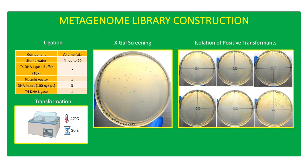One Shot Top 10 competent cells were used for transformation. Sterile lysogeny broth was used to grow cells. Transformation tubes were manually shaken intermittently every 10 minutes for 1 hour during incubation at 37 degrees Celsius. The transformation reaction was plated on LB-X-Gal chloramphenicol agar media using 100 microliters of transformed cells.